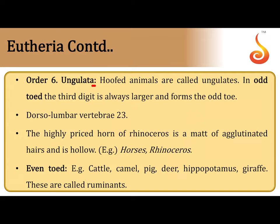Ungulata are mammals that walk on their toes. Those with an odd number of toes are called Perissodactyla — they walk on their third digit prominently. Horses walk on their third digit; rhinoceroses have three toes. Rhinos have 23 vertebrae on their back, and their horn is not a bony structure but a mass of agglutinated hair, hollow on the inside. Rhinoceroses are illegally poached for this highly prized horn.